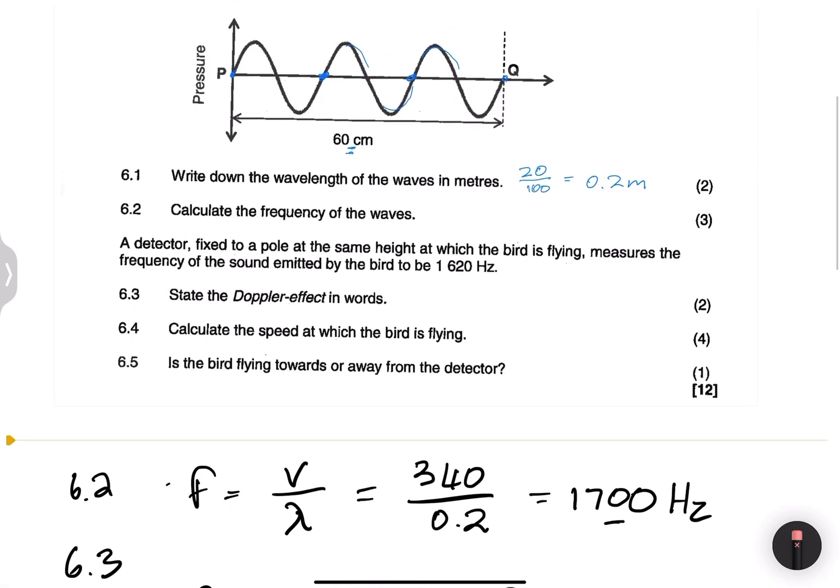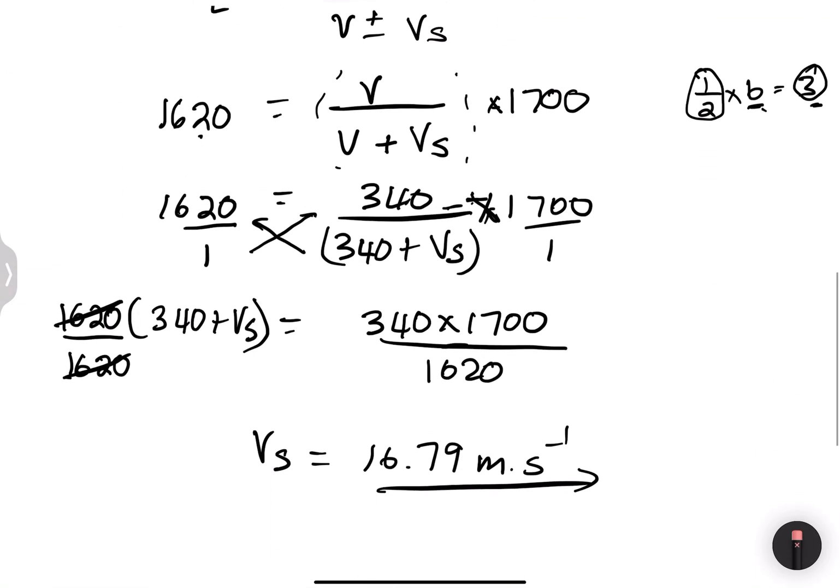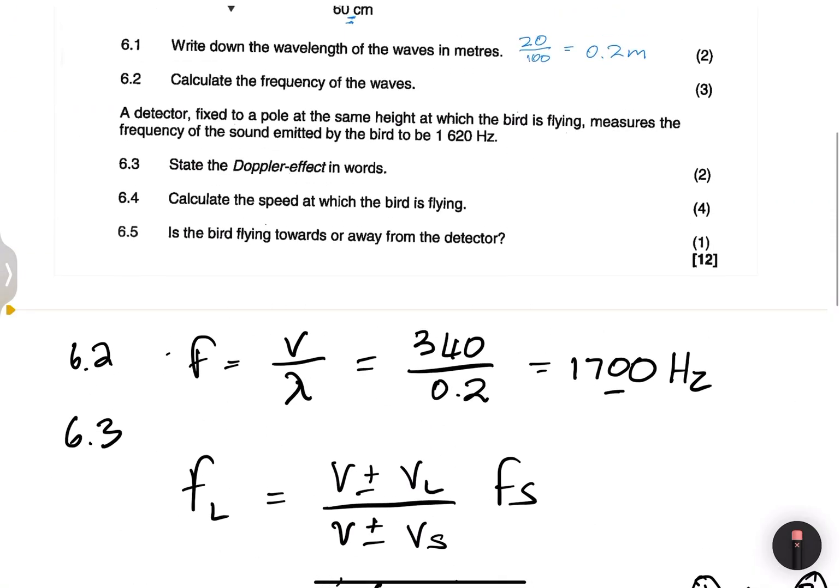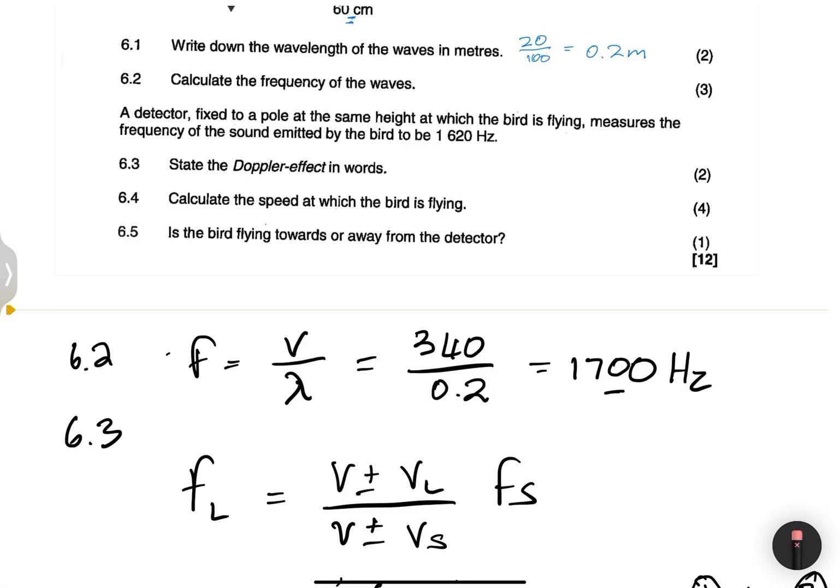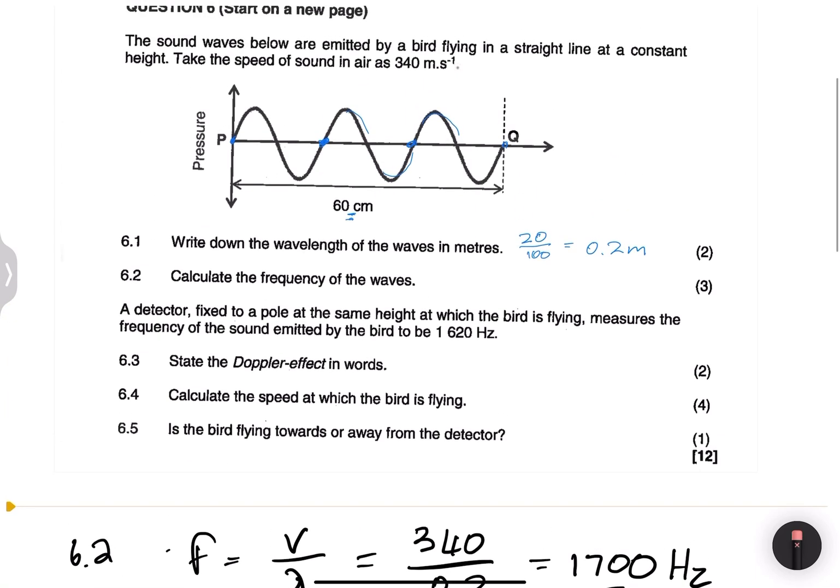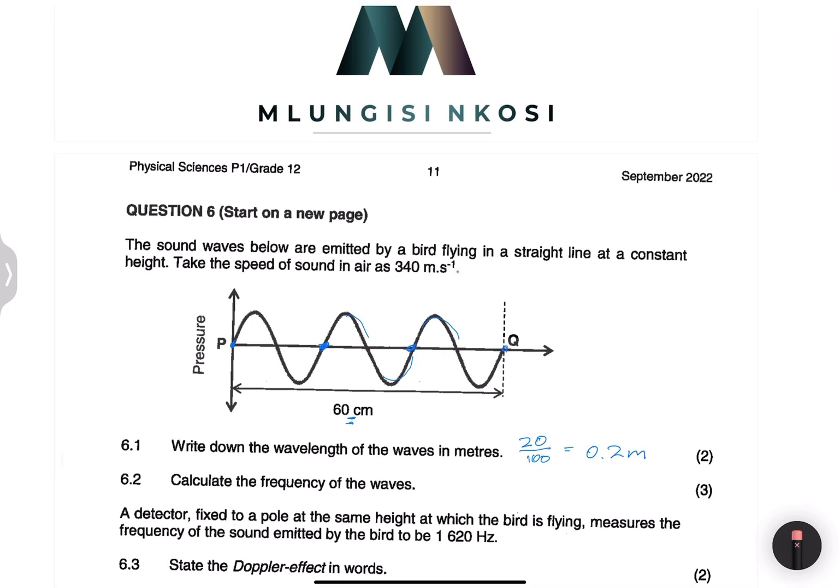They ask us the question finally, is the bird flying towards or away from the detector? And of course, in this case, it would be flying away. And how do we know that? Because the detected frequency is less than the emitted frequency of 1,700. And that's it, how the cookie crumbles when it comes to the Doppler effect. I hope that you were able to follow and that you'll be able to answer whether now or in future, even as you prepare for your exams. Otherwise, from me, your favorite uncle, I'll see you guys again next time. Please don't forget to like and share with as many people as possible.